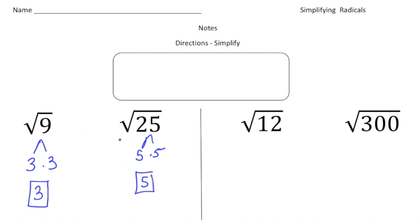Now, these first two are pretty simple because they're rational, but how about these other two over here — the square root of 12 and the square root of 300? The key thing you have to know in order to simplify these is you have to factor. Please write that inside this box. And that's what we did for the square root of 9 and the square root of 25 — we factored, because 3 times 3 is 9, and 5 times 5 is 25. But this is going to be a little bit different.